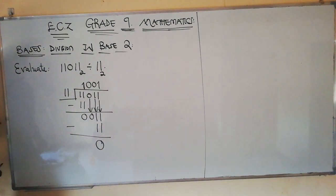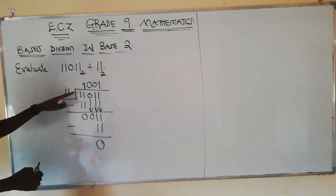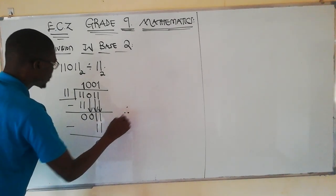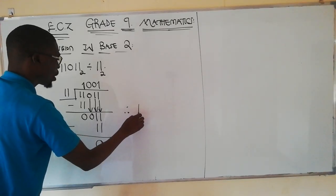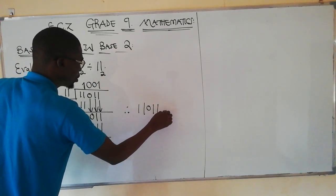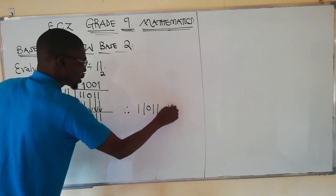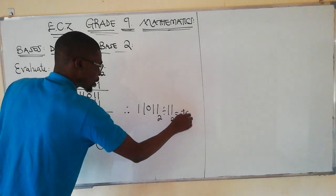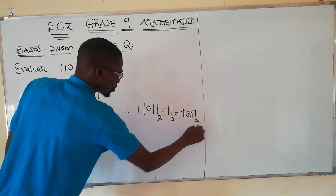So you can see that when you divide 11011 by 11 we get, therefore we have 11011 base 2 divided by 11 in base 2, this will give us 1001 in base 2.